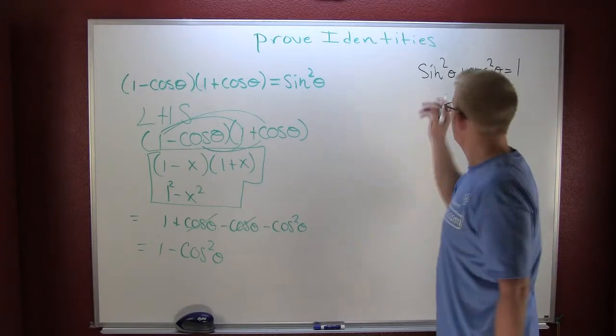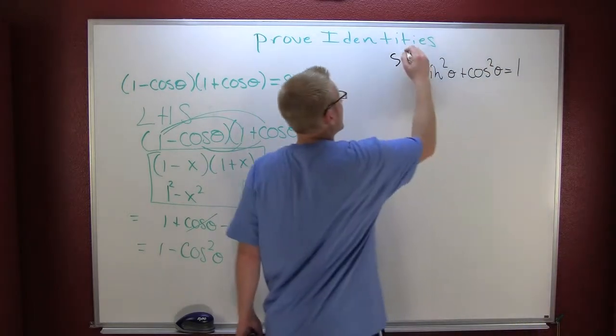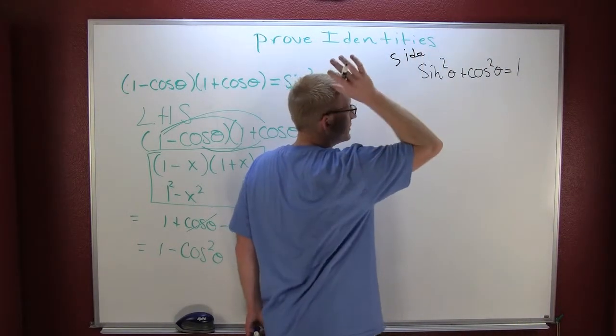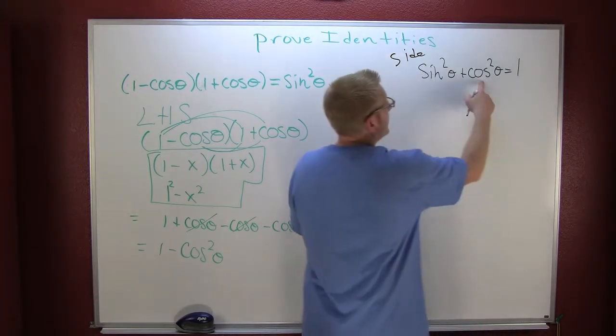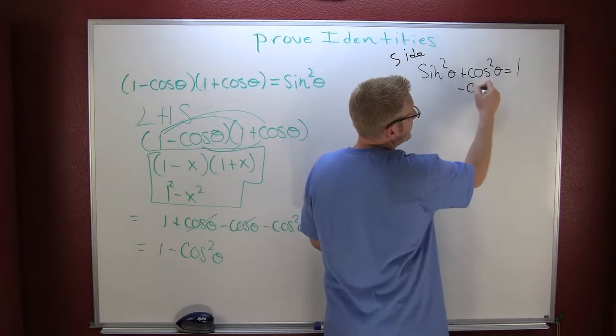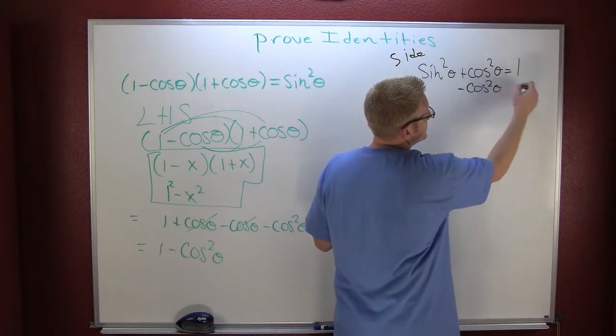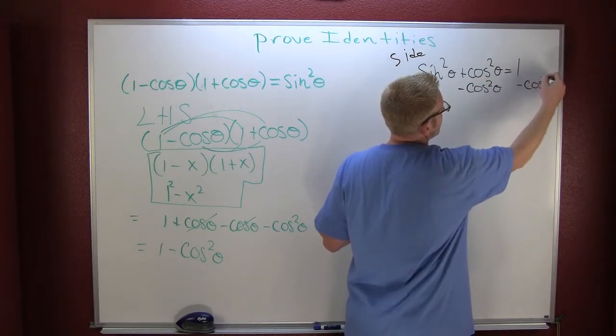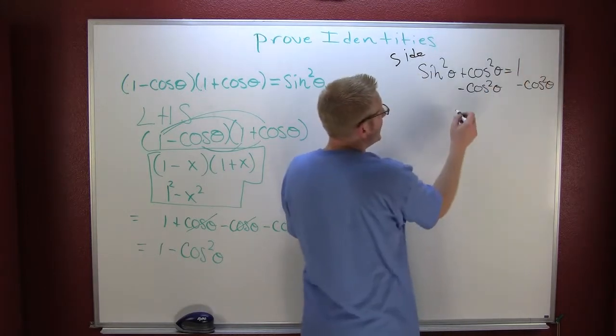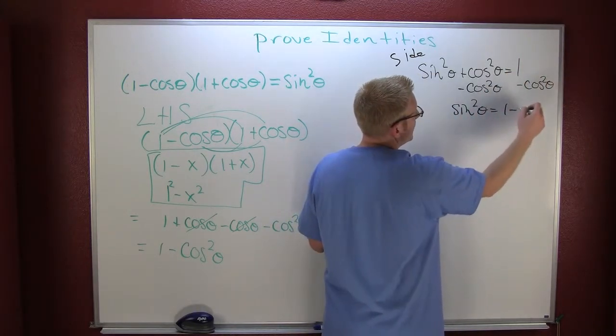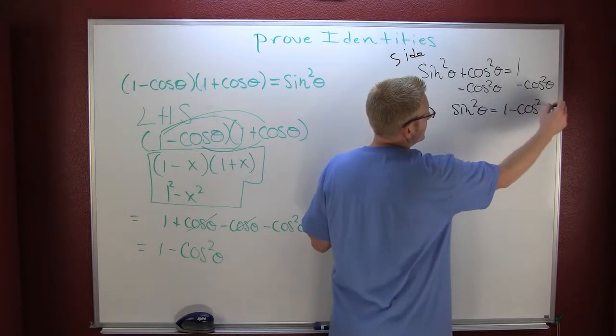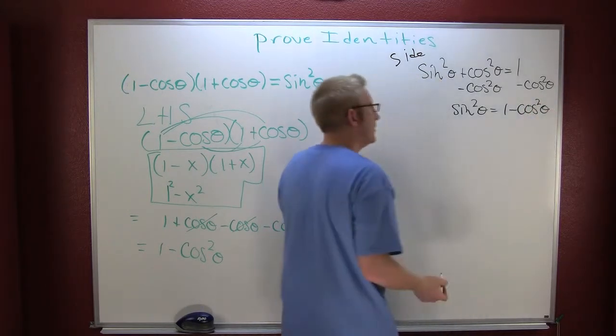Now this isn't in my proof, this is over on the side. What I'm looking for is this piece right here: 1 minus cosine squared. Well, if I was to subtract off a cosine squared on each side, then wouldn't I have sine squared theta is 1 minus cosine squared theta? I believe I would.